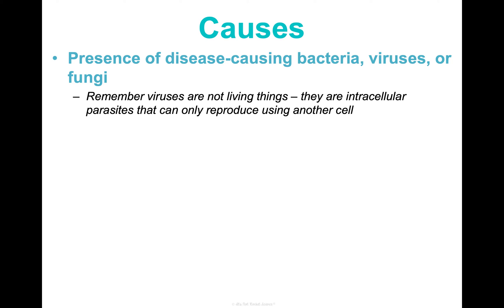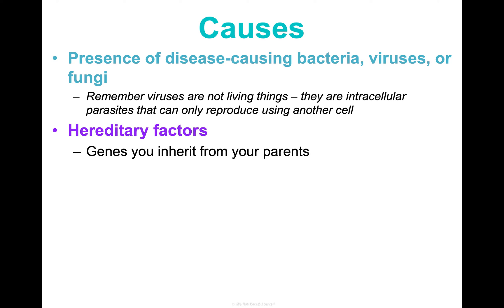There's also more that can cause disease beyond pathogens and biological entities. One of those things is hereditary factors. You may inherit genes from your parents that give you a genetic disorder, such as cystic fibrosis. But you can also inherit genes that give you a genetic predisposition to certain diseases, such as the BRCA1 gene, which can make you more likely to get breast cancer. There are also connections to genes that make you more susceptible to addictive behaviors or depression.